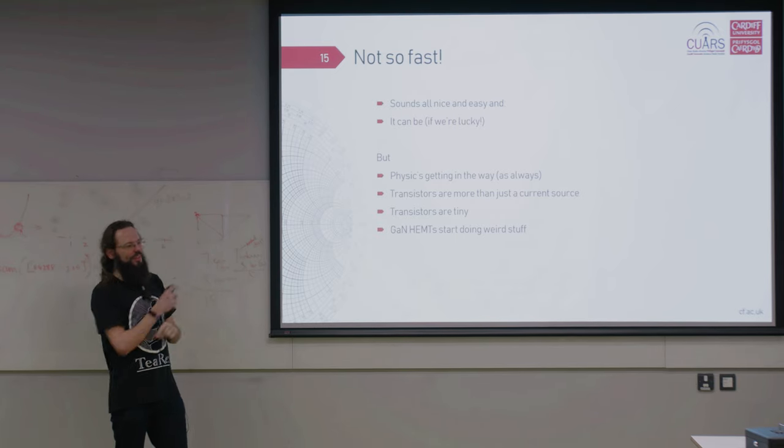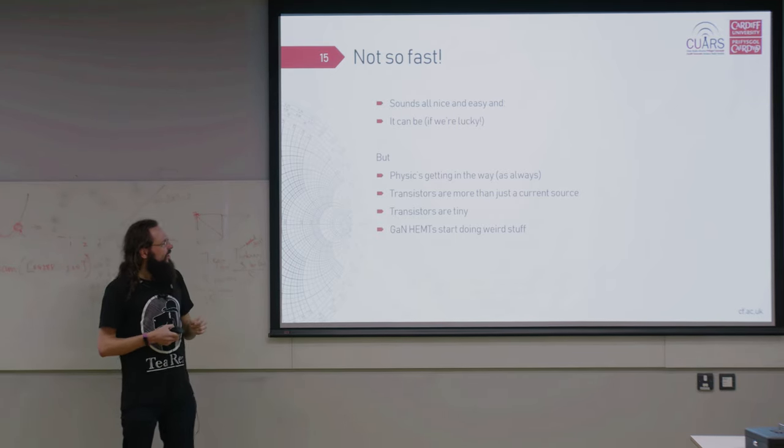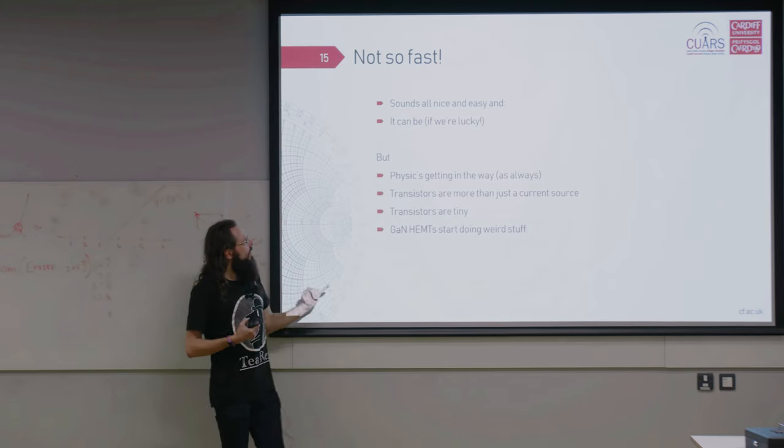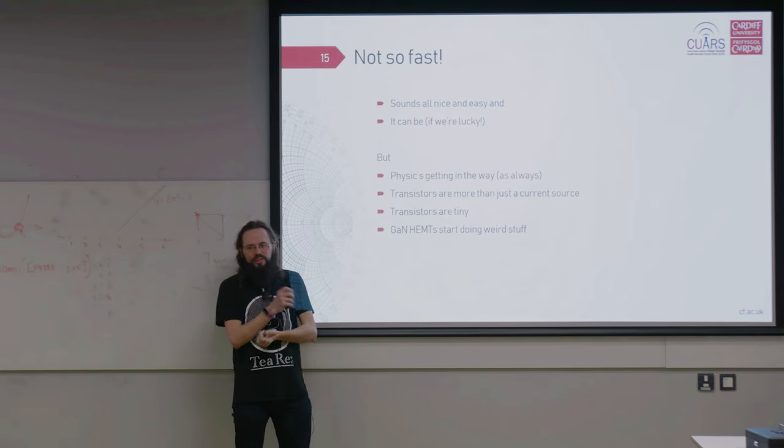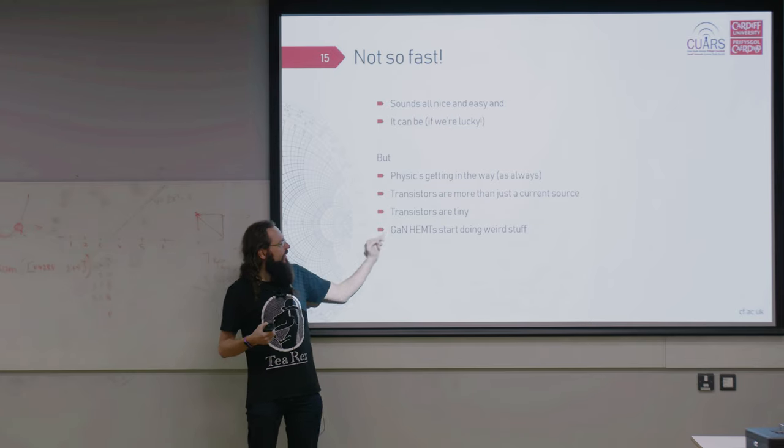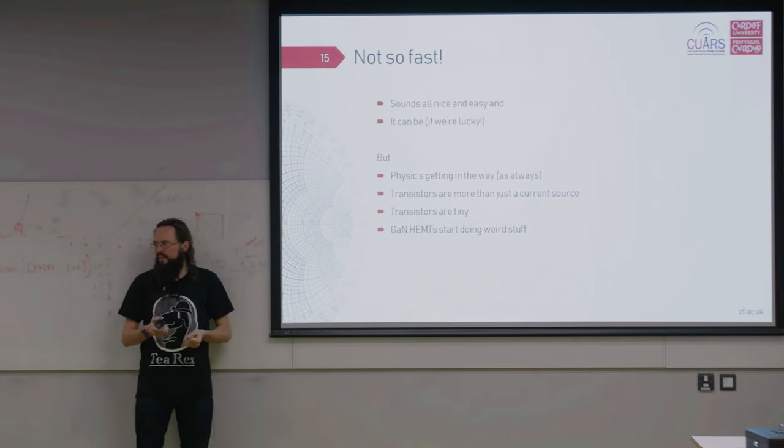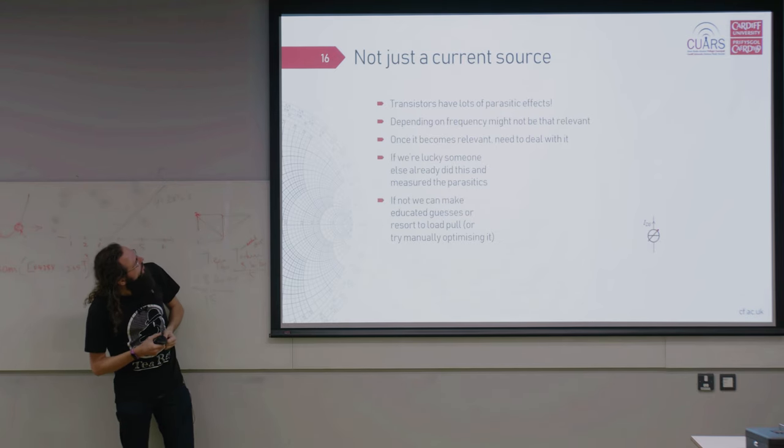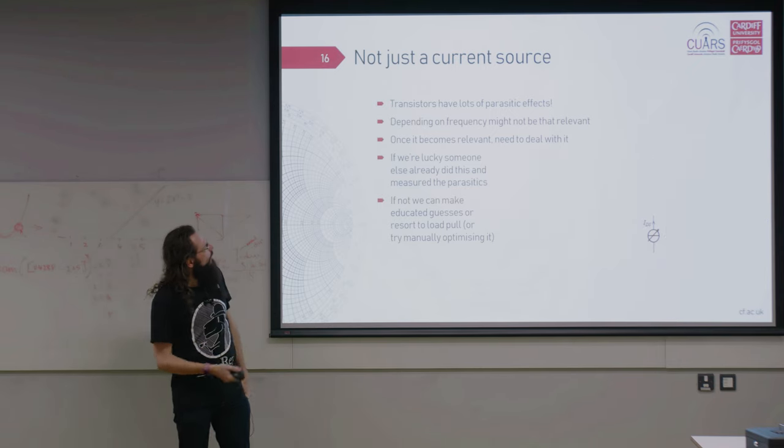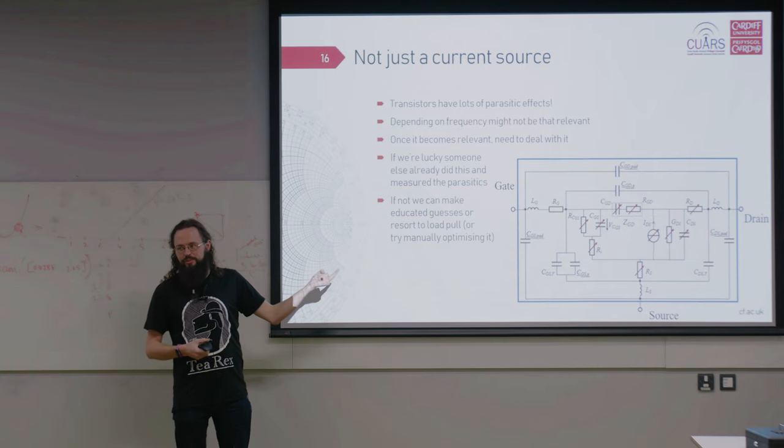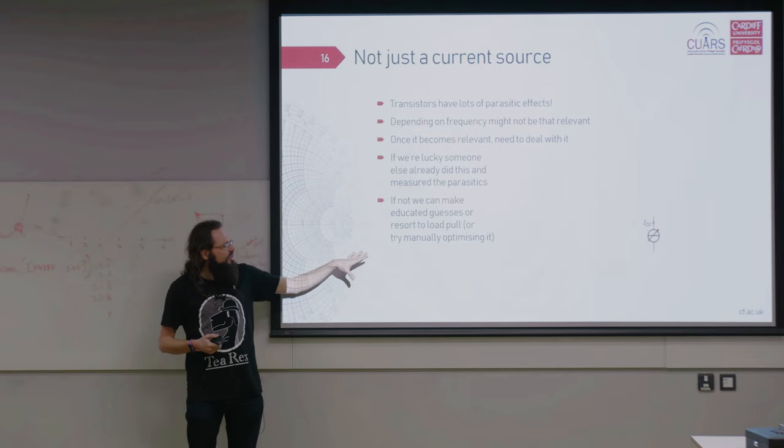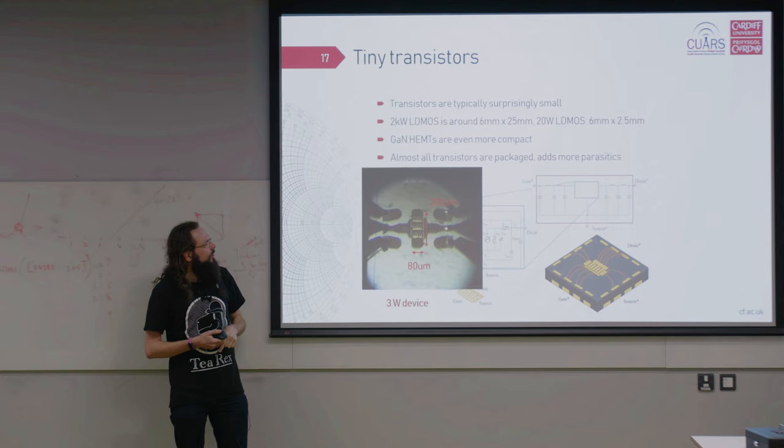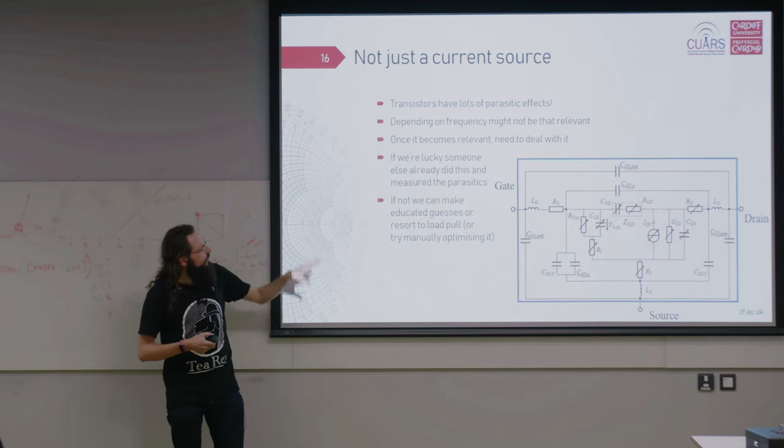Now that might all sound really nice, but it's not always quite that easy. Physics get in the way, as they do. We have transistors, which are more than just a current source. The transistors are tiny, which is an issue I'll tell you about in a bit. And we have gun hands, which do weird stuff. So not just the current source, because we have all kinds of things around it. And that's just like one transistor. Ideally, we're working in a frequency where all of that is not relevant. We're just here, all nice, all good. But if we're not quite as lucky, we need to deal with all of those.